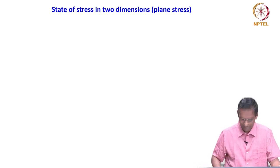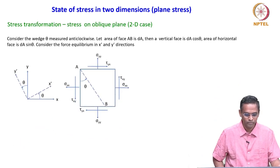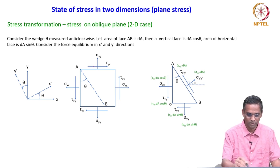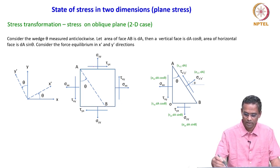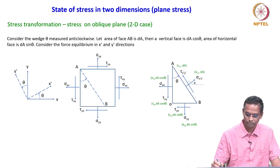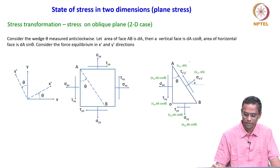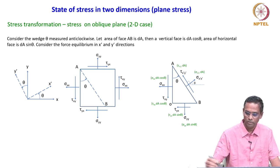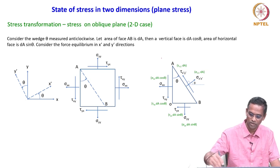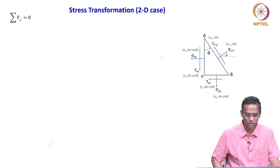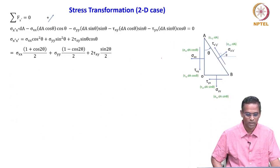What we have seen yesterday is we took a geometry to describe this and then took a wedge out of this square member. We looked at the forces normal to this oblique plane, then tried to do force balancing because strength of materials assumes the member is in equilibrium. We tried to calculate force equilibrium for normal stress as well as shear stress, and from there we calculated the expression for normal stress and shear stress in a general manner.